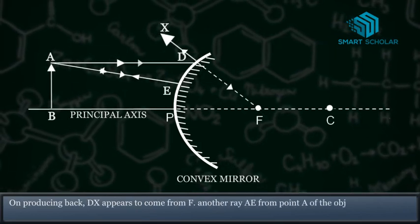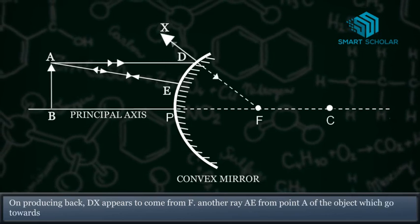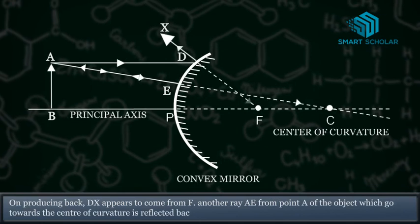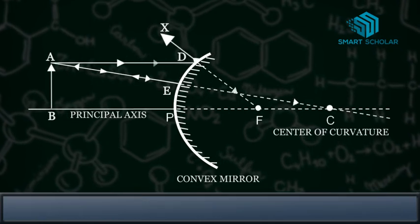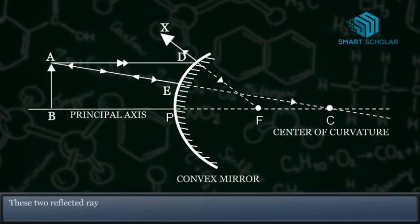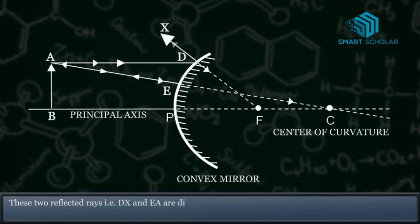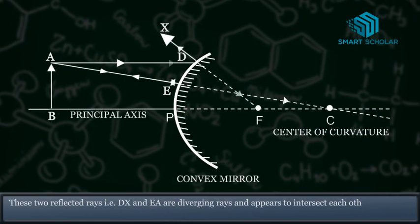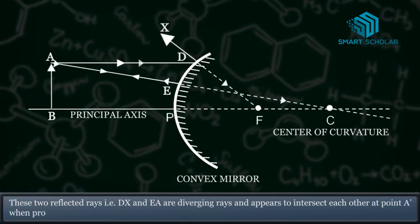Another ray from point A of the object which goes towards the center of curvature is reflected back. These two reflected rays are diverging rays and appear to intersect each other at a point when produced back.